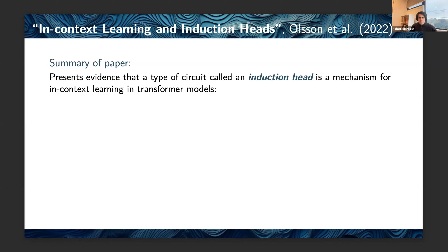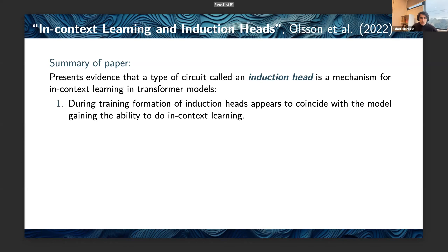The paper presents five arguments towards this claim. During training, three events appear to coincide: there's a sudden drop in training loss, the model appears to gain the ability to do in-context learning, and these induction head circuits appear to form all at the same time.